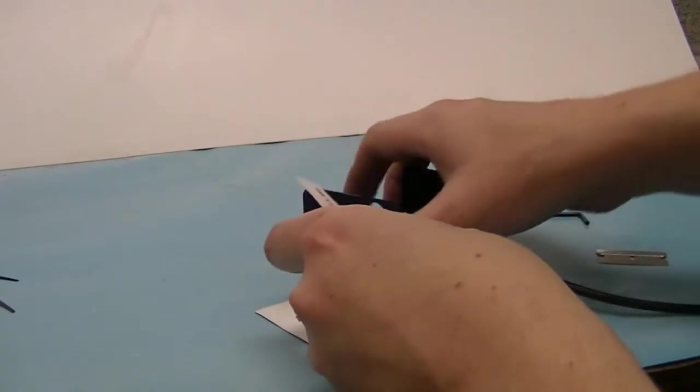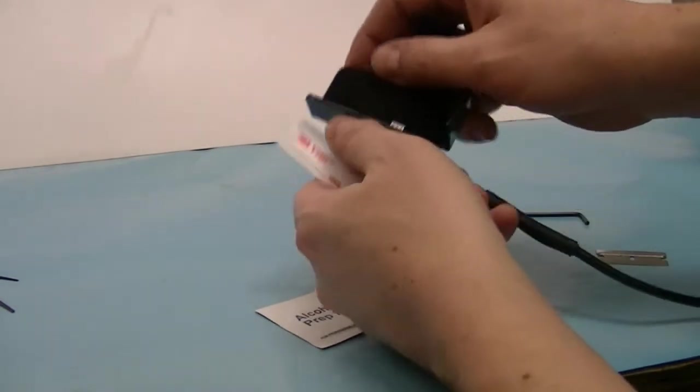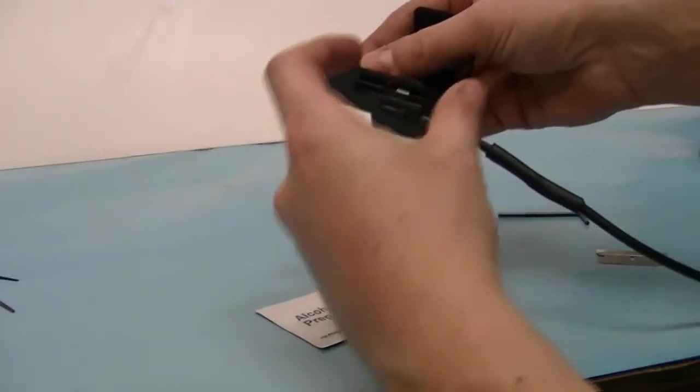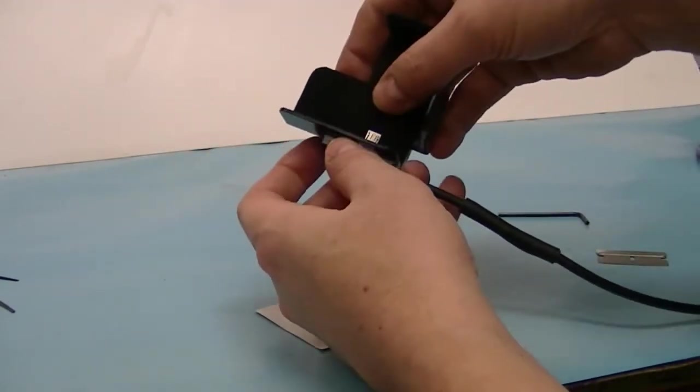This tape does hold 160 pounds per square inch, so when you're twisting it, that's not where the strength lies on the tape. It's in and out, and that's what is used here.